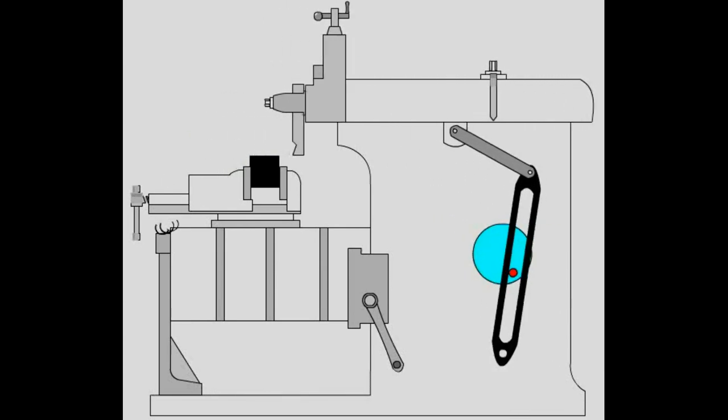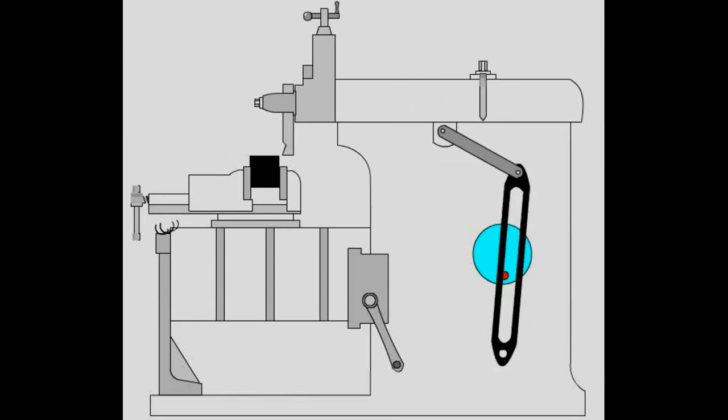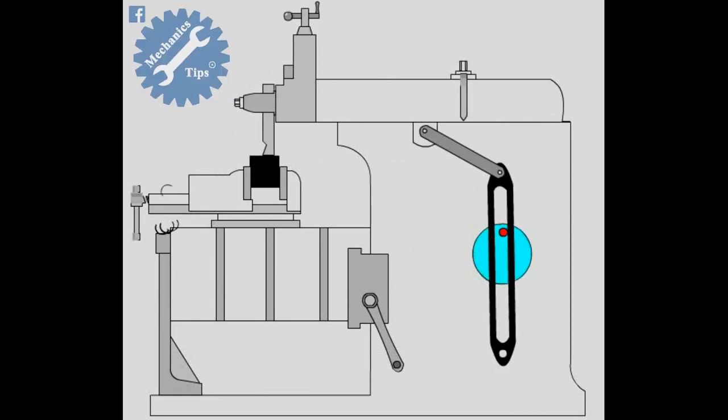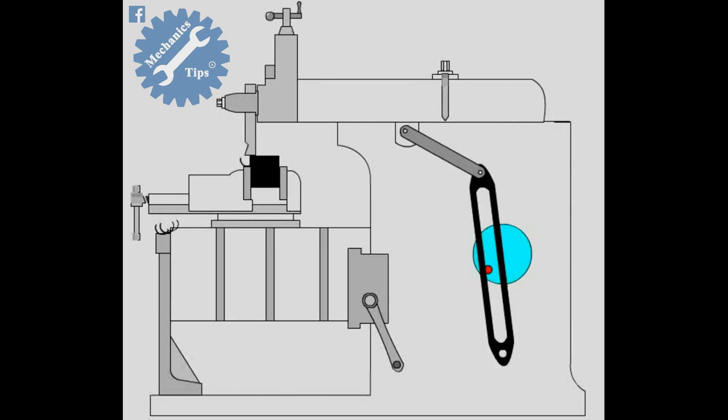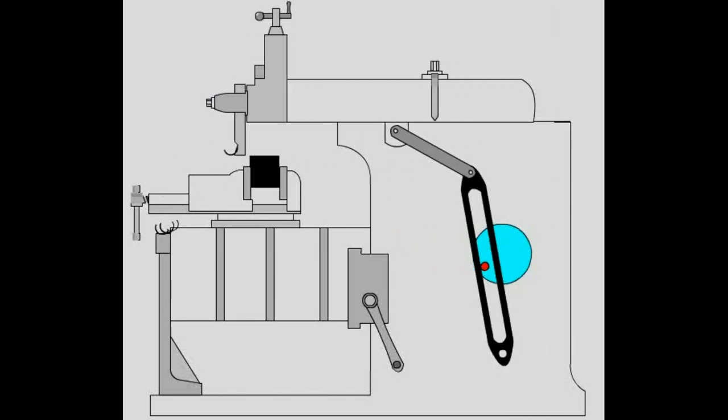A shaping machine is also used to machine surfaces. It can cut curves, angles, and many other shapes. It is a popular machine in a workshop because its movement is very simple although it can produce a variety of work.